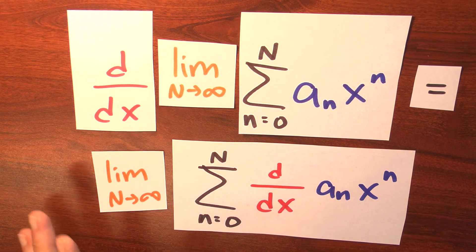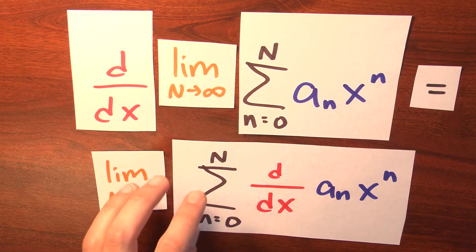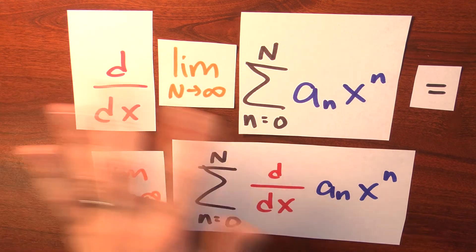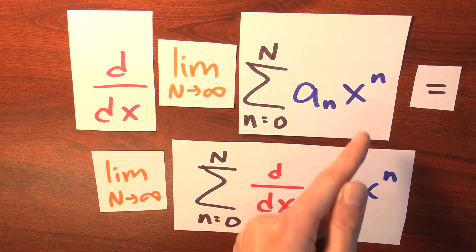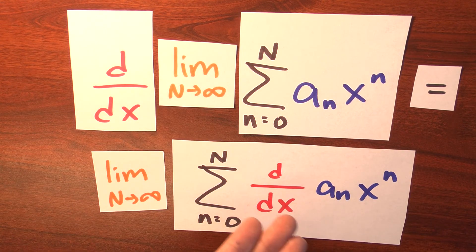And although we do have a theorem that the derivative of a sum is the sum of the derivatives, we don't have a theorem, and it's not true in general that the derivative of a limit is the limit of the derivatives. So it's a big deal. The fact that you can differentiate a power series term by term, it's a theorem. I mean, that's really something that's not obvious.